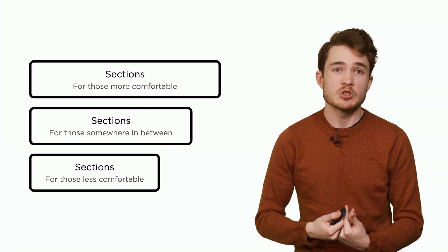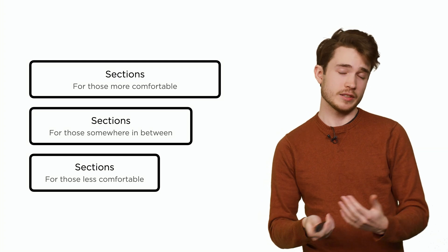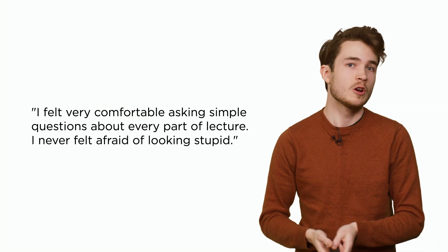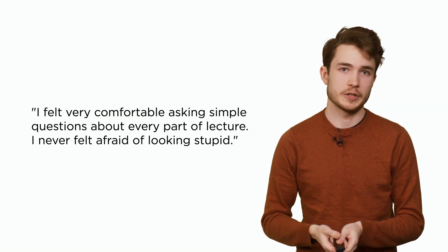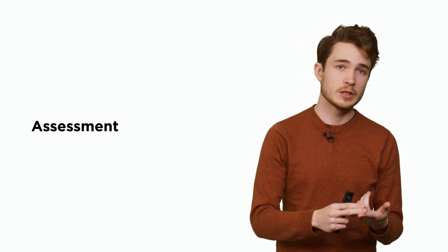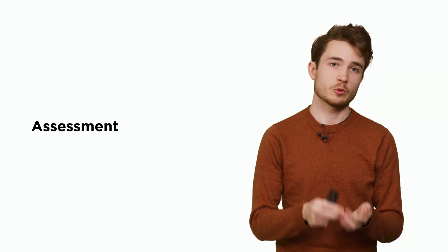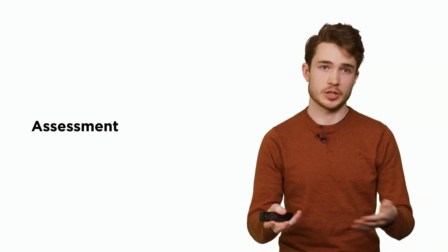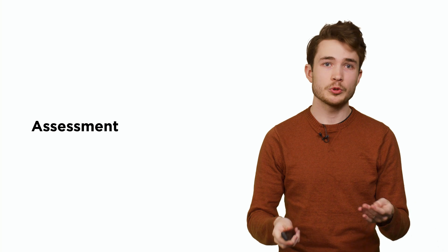When we ask students about these sections, they often say that they can indeed ask the questions they want to ask — and do so without looking stupid. One of the questions we wrestle with at the end of the term is how do we assess students across comfort levels? What we do is look at grade distribution at the end of the term across those who are more comfortable, less comfortable, and somewhere in between. If those distributions vary substantially across comfort levels, we apply some normalization to different components of the course.